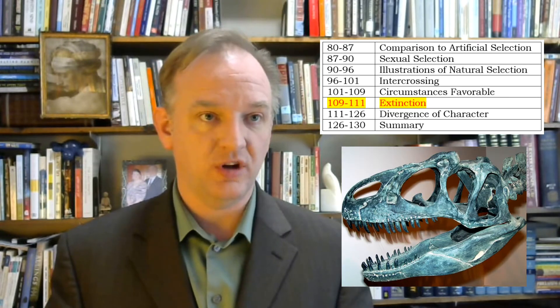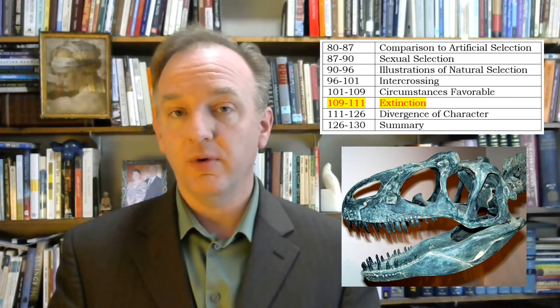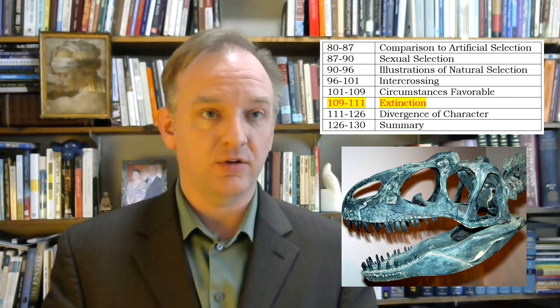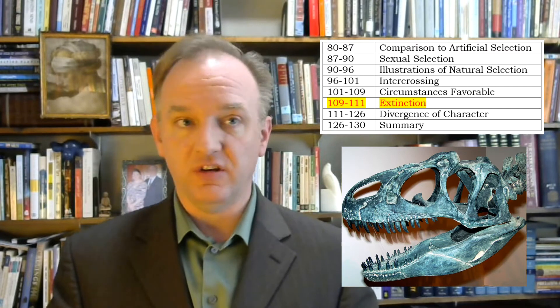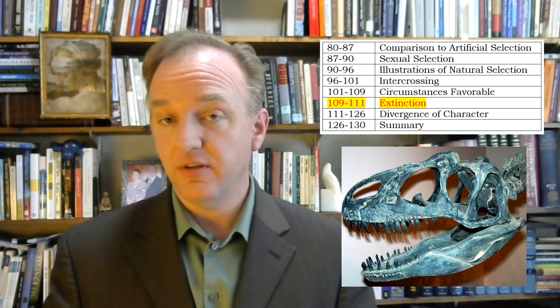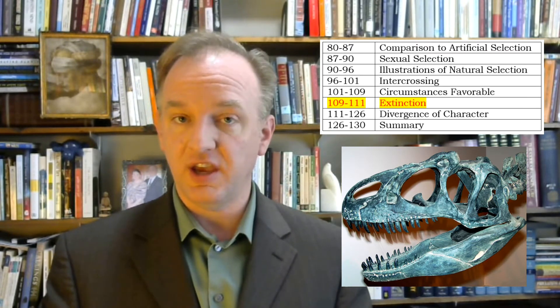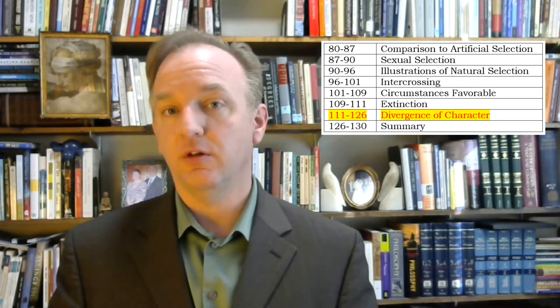The sixth section is a two-page treatment of extinction. Darwin considers the factors and mechanisms of species extinction. This is a short section and it's worth a careful read through.